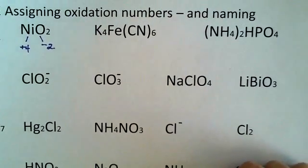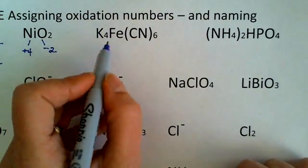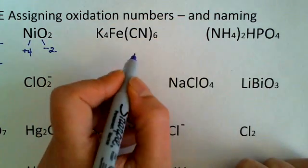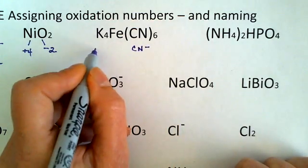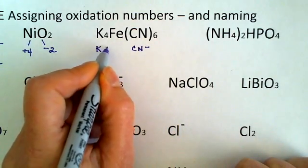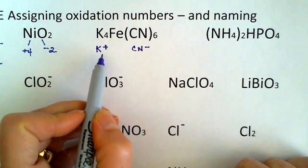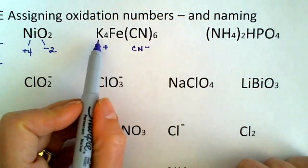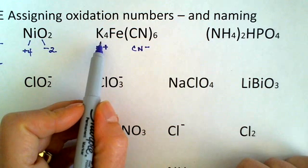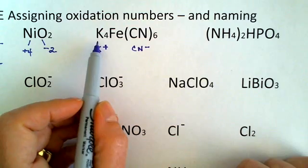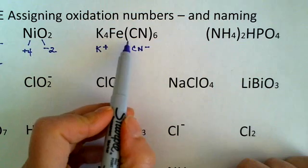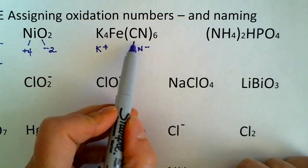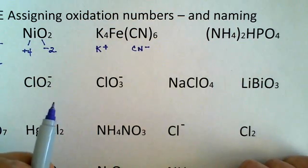Now I've got this big thing over here made of potassium and iron and the cyanide ion. Cyanide ion is CN minus, and I've got a K plus. So if I have a K, I know it's a K plus. Potassium is an alkali metal, so it's not going to make a covalent bond. It will make an ionic bond.